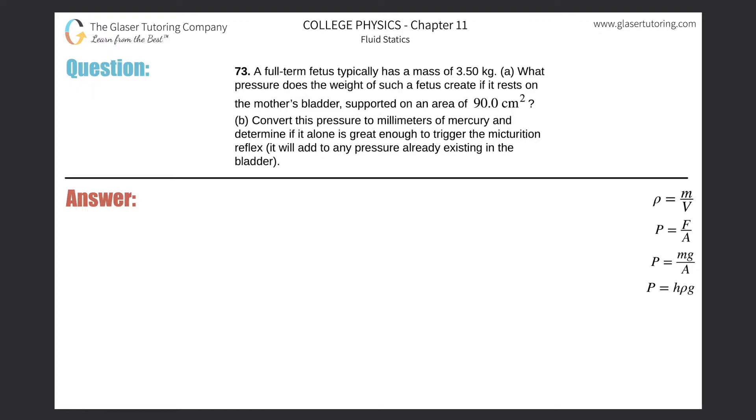Number 73: A full-term fetus typically has a mass of 3.5 kilograms. Part A: What pressure does the weight of such a fetus create if it rests on the mother's bladder, supported on an area of 90 square centimeters?